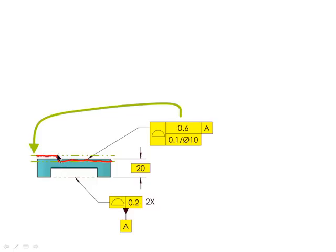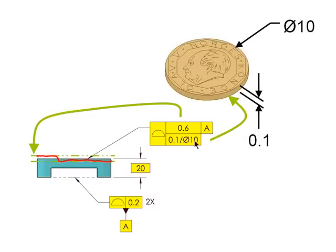To avoid this abrupt change, I can add profile on a unit basis as shown in the lower segment. You can think of this tolerance zone as a coin with a diameter of 10 and a thickness of .1. This coin applies anywhere, or I should say everywhere, on the surface.